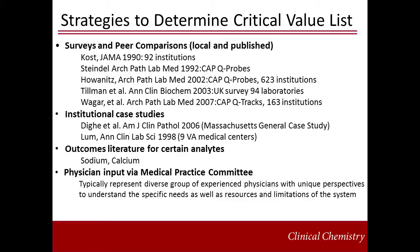Given the complexity of individual hospital systems and practices, regulatory agencies have allowed for autonomy when it comes to defining their critical value list. However, hospitals should be cautioned not to deviate too far from the standard of care. Attempting to define what is considered critical can therefore be somewhat of a challenge for hospitals and laboratories.